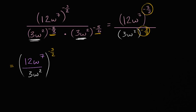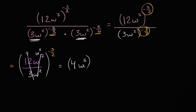And this is pretty straightforward to simplify. 12 divided by 3 is 4, and w to the seventh divided by w squared — you could say this is w to the seven minus two power, so that's w to the fifth power. So it all simplified to 4w to the fifth power to the negative 3/2.